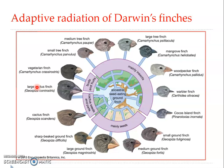The most conspicuous differences among the species are the sizes and shapes of the beak, which are correlated with marked differences in their feeding habits. Six of the species are ground finches with heavy beaks specialized for crushing seeds. Some of the ground finches live mainly on a diet of seeds found on the ground — for example, the three seed-eater ground finches.